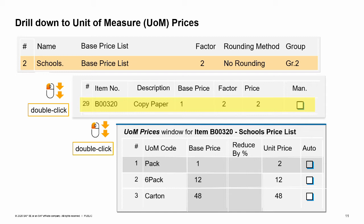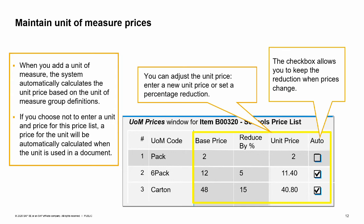For more information on units of measure and how they are set up, see the e-learning courses on units of measure. When you add a row for a unit of measure, the system automatically calculates the unit price based on the unit of measure group definitions. If you choose not to enter a unit and price for this price list, it is still possible to use that unit in a sales or purchasing document. One reason to add a unit of measure price is that you can enter a different unit price or modify the unit price with a percentage discount or surcharge in the reduce by percentage column. The reduction or surcharge is calculated immediately and reflected in the unit price.